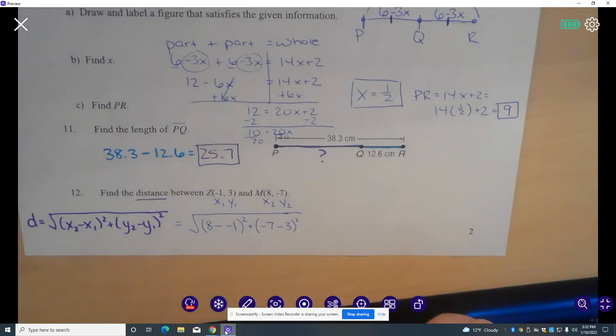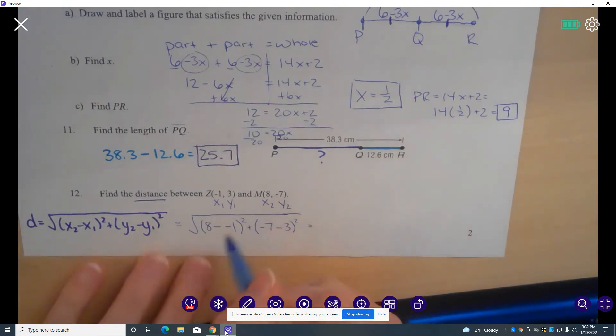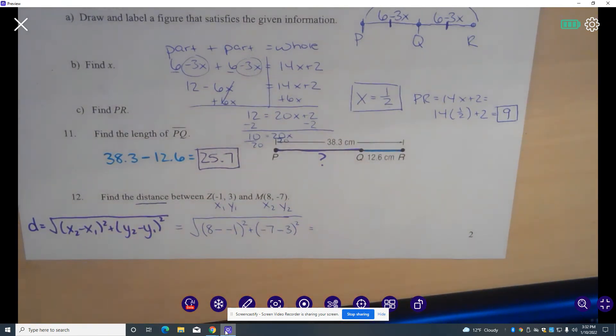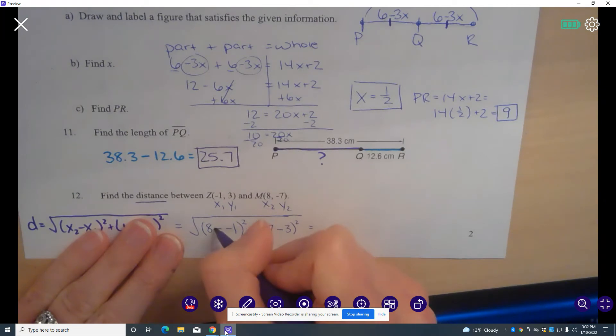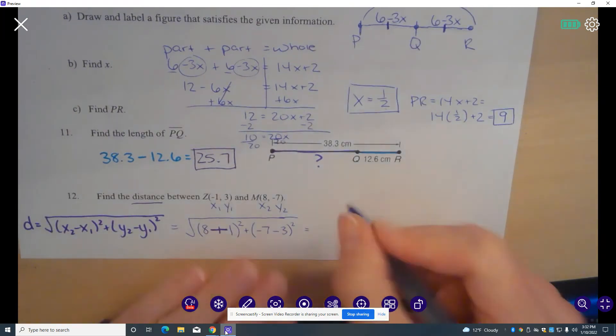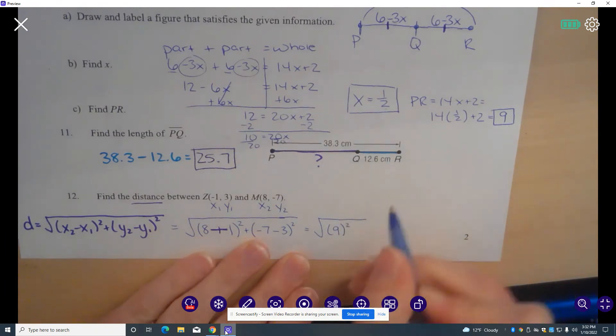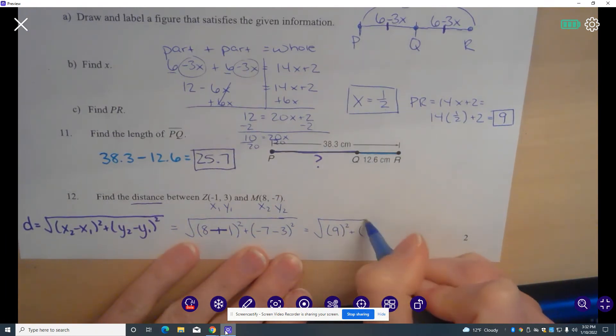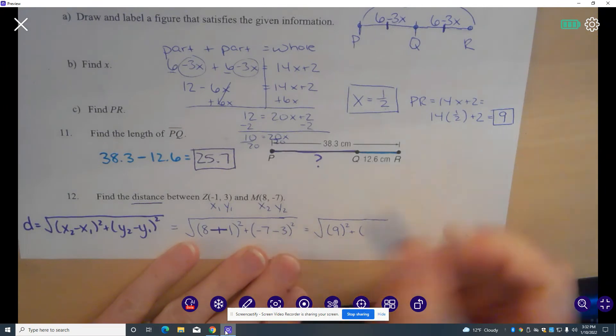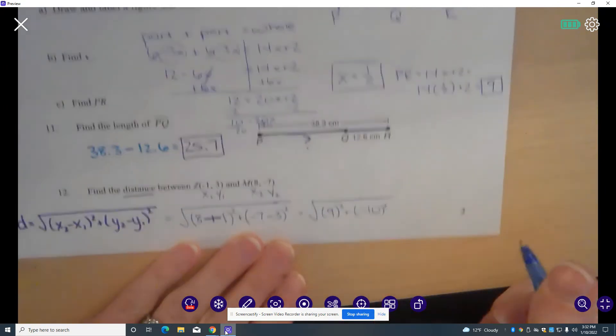I'm going to do what's inside parentheses first. Remember, minus and negative, that's the same thing as adding. So 8 plus 1 is 9. Keep it in parentheses. Negative 7 minus 3 is negative 10. Keep it inside parentheses.